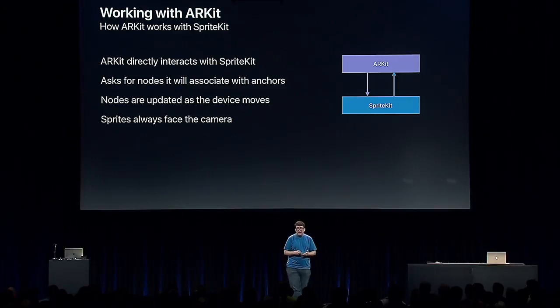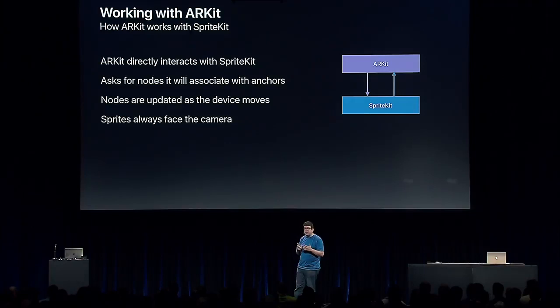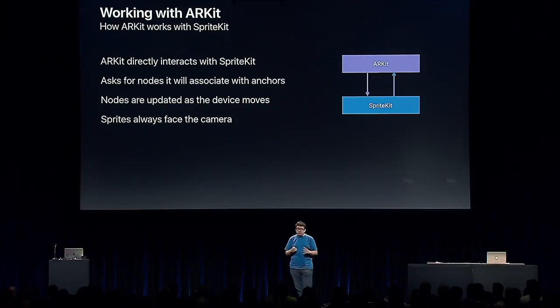So how do we get ARKit working with SpriteKit content? ARKit is designed to interact directly with SpriteKit. ARKit will ask you for SpriteKit nodes to attach to anchors, and will automatically position, rotate, and scale those nodes as the device moves, so your SpriteKit content stays aligned with the anchors, giving the appearance that your content is rooted in the real world. Sprites are rendered so they are always facing the camera — a technique known as billboarding, commonly used in early 3D games.